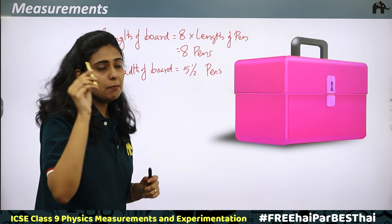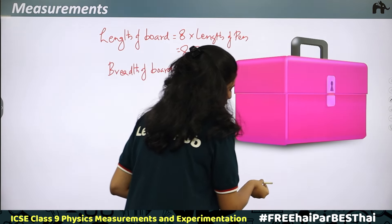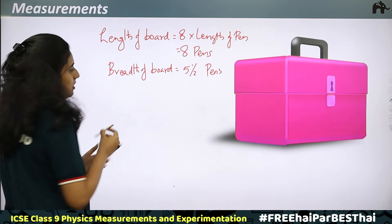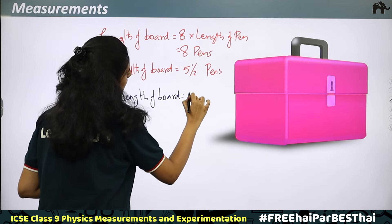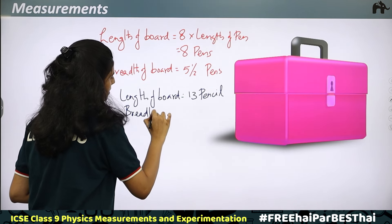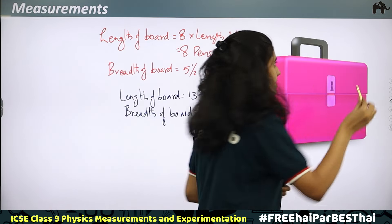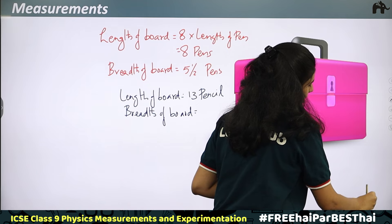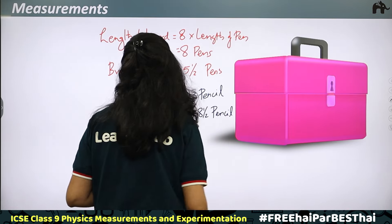Now if I use a smaller object - a pencil - let us measure the length again: 1, 2, 3, 4, 5, 6, 7, 8, 9, 10, 11, 12, 13. The length of board equals 13 times the length of a pencil. For the breadth: 1, 2, 3, 4, 5, 6, 7, 8, 8 and a half. So 8.5 times the pencil gives the breadth of the board.